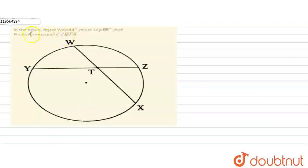Hello friends, now we are going to solve this question. In the figure, arc WY equals 44 degrees and arc ZX equals 68 degrees. We need to find the measure of angle ZTX.